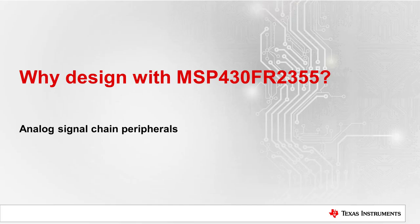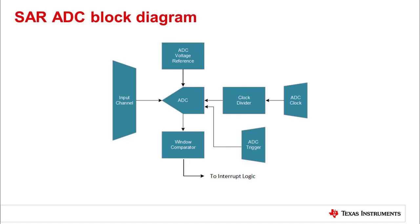Next, let's talk about the analog signal chain peripherals within the device. The integrated SAR ADC has a maximum sample rate of 200 kilo samples per second. It can be configured in 8-bit, 10-bit, or 12-bit configurations.